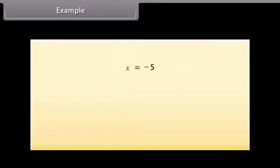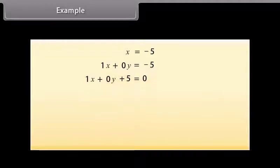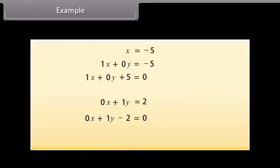Now look at this equation. We will write this equation in two variables. This can be written as 1X plus 0Y is equal to minus 5, or 1X plus 0Y plus 5 is equal to 0. Similarly, the equation Y is equal to 2 can be written as 0X plus 1Y is equal to 2, or 0X plus 1Y minus 2 is equal to 0.